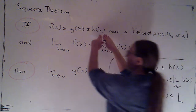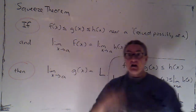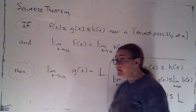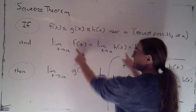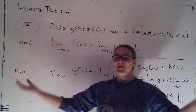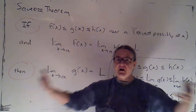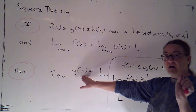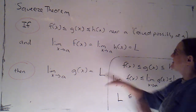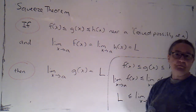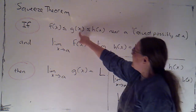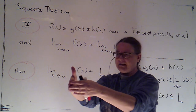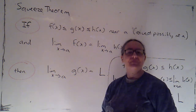What we suppose is that we have this relationship between three functions: a smaller one, one in the middle, and a bigger one. Then we also have to know that the limits of the smaller one and the bigger one are the same — they're going to the same place. The conclusion is that the limit of the middle one not only exists but is the same as the ones on either end. If it's always in between these two things and they're going to the same place, it's going to that same place as well.